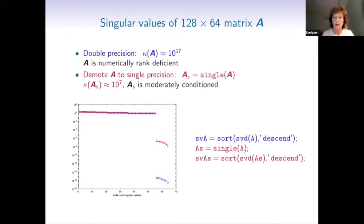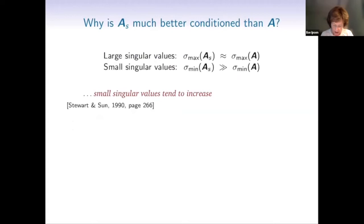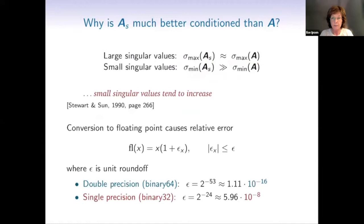So our question is, why is the single precision version much better conditioned? Well, the large singular values more or less remain the same in eyeball norm, and the small singular values when you demote the matrix to single precision increase. And that was already observed by Stewart and Sun in their book. So what happens? If we store a matrix, we commit a floating point error. In double precision, it's 10 to the minus 16. When we demote the matrix to single precision, we make an error of 10 to the minus 8.